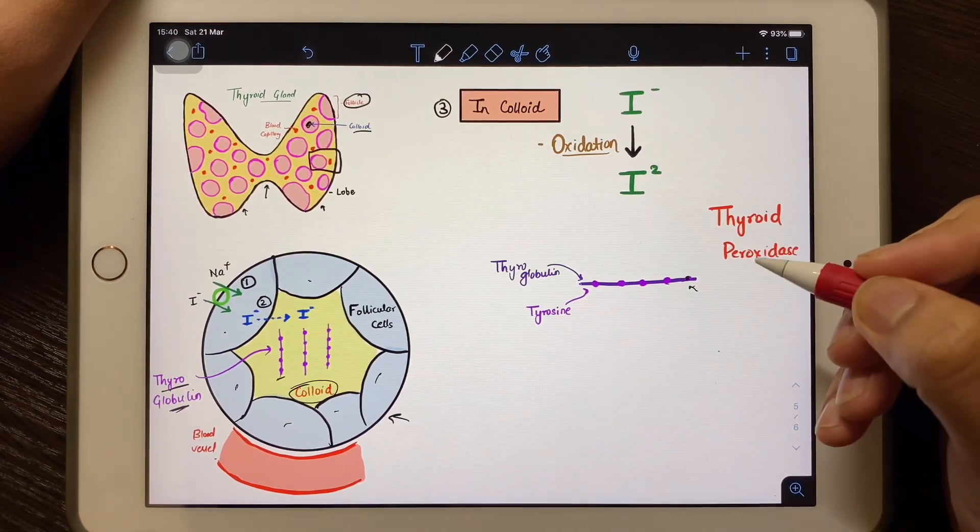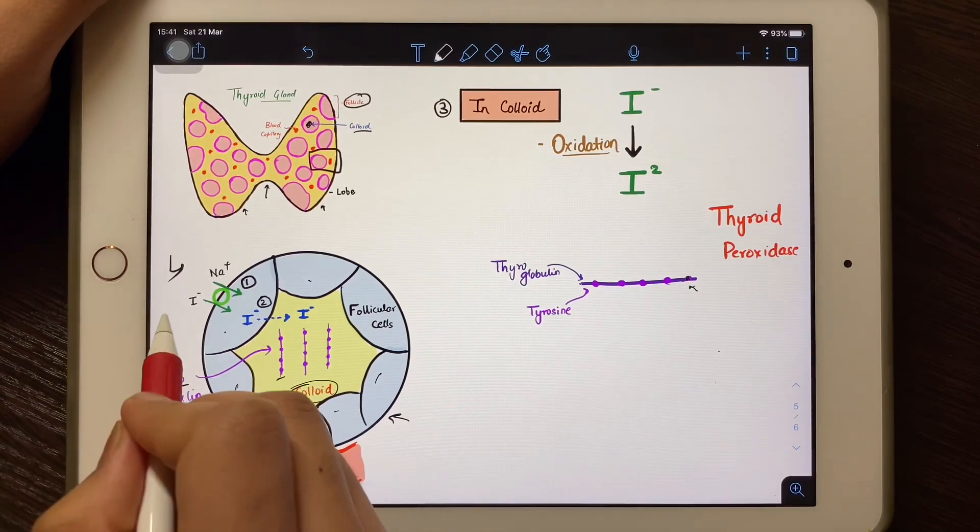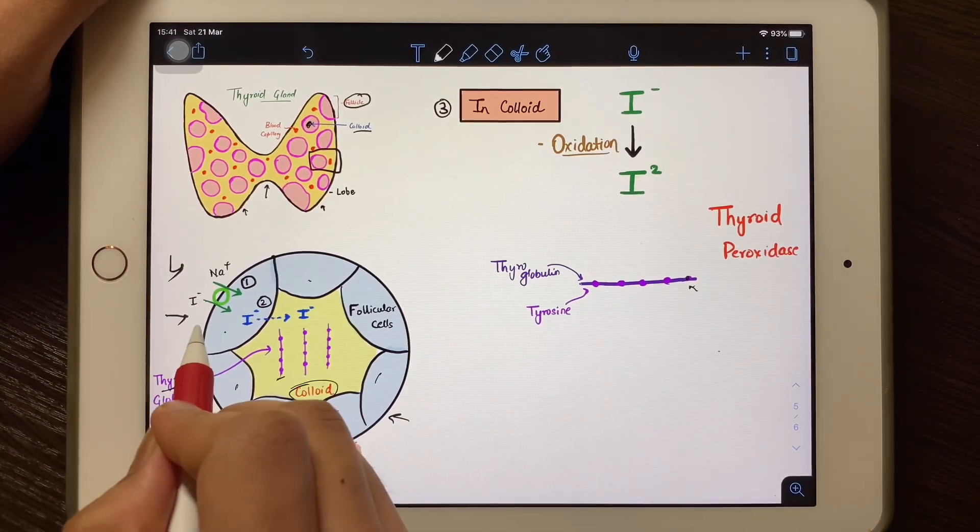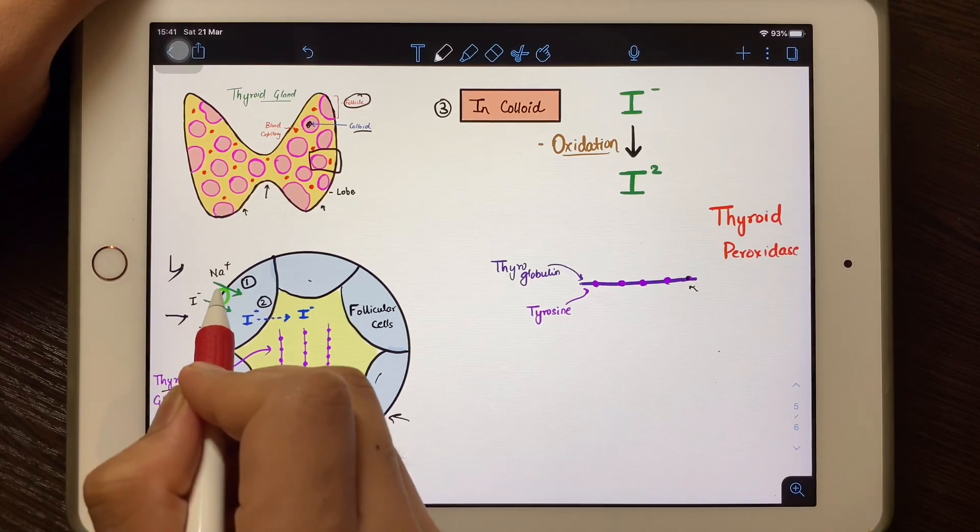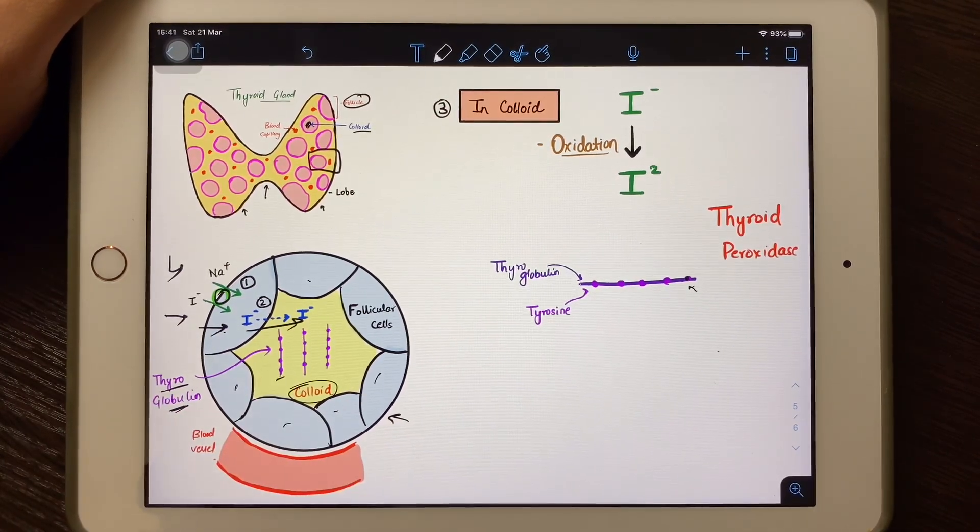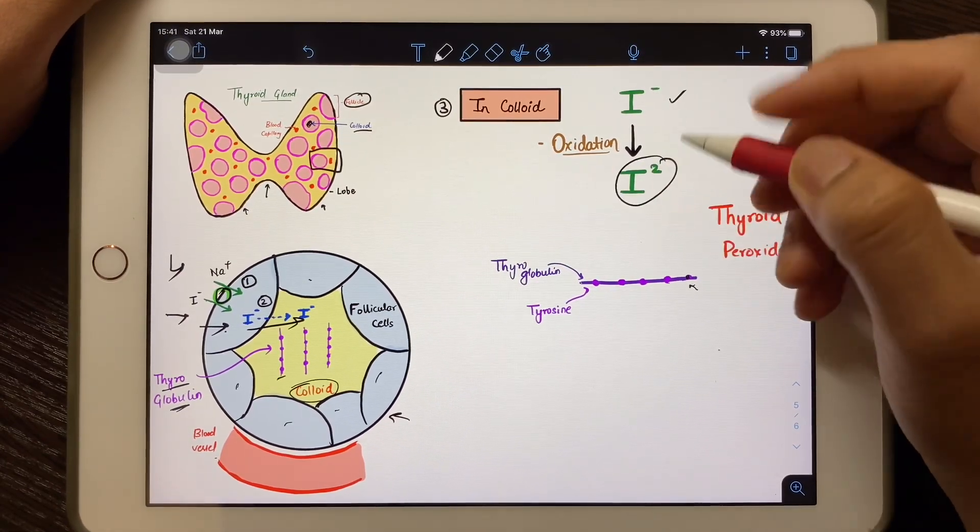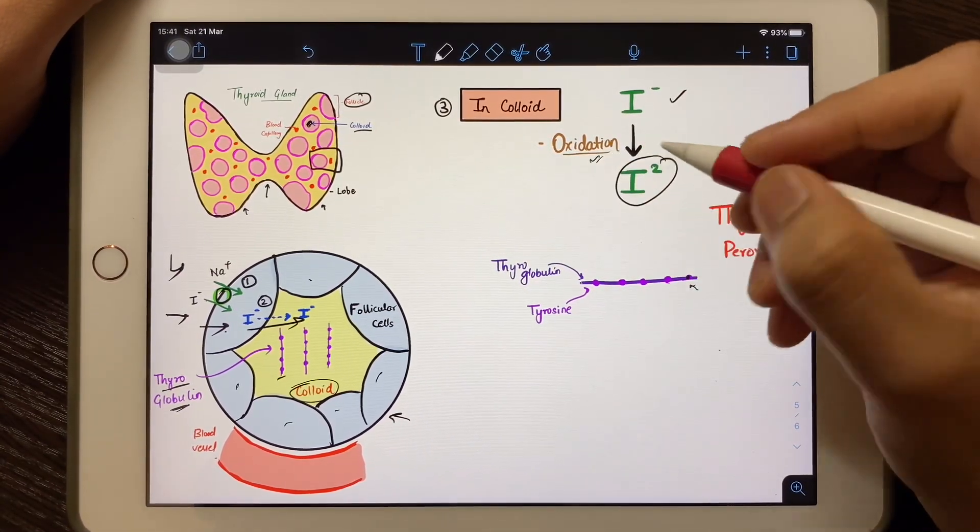When we eat food rich in iodine, this iodine comes to the blood and then goes into the thyroid gland via sodium-iodide co-transporter. Then this iodide goes into the colloid, where it gets converted into iodine. This process is known as oxidation, and then this iodine gets joined with tyrosine.